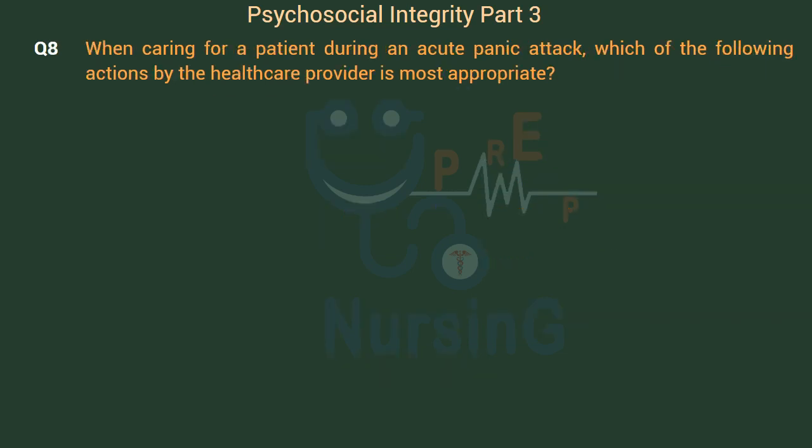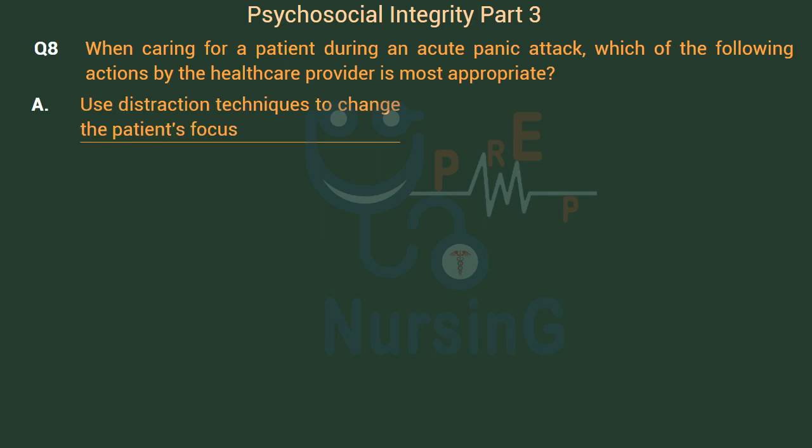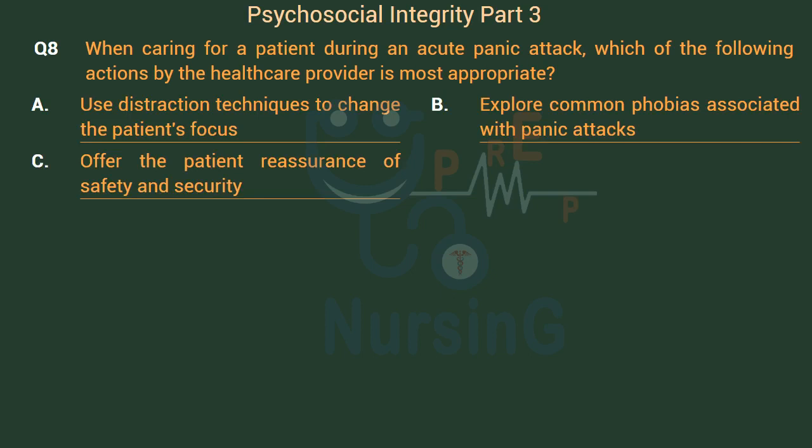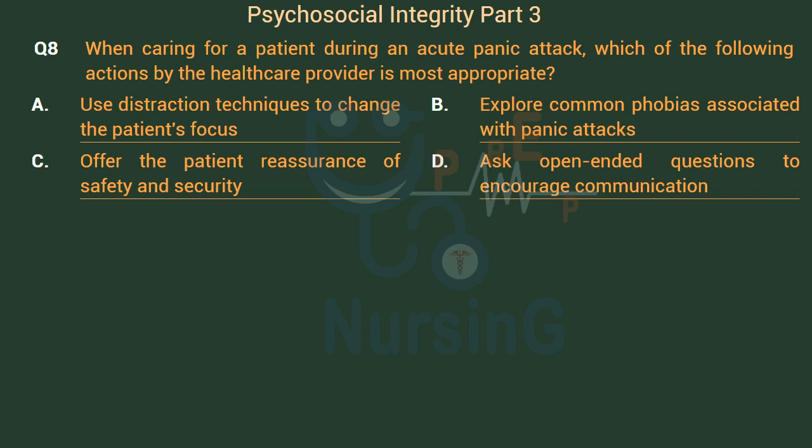When caring for a patient during an acute panic attack, which of the following actions by the healthcare provider is most appropriate? Option A: Use distraction techniques to change the patient's focus. Option B: Explore common phobias associated with panic attacks. Option C: Offer the patient reassurance of safety and security. Option D: Ask open-ended questions to encourage communication.